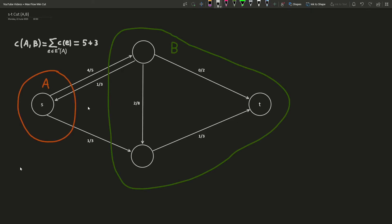The capacity of an ST cut is the sum of the capacities of all edges that stick out of A. We denote edges sticking out of A by writing E plus of A and edges sticking in by writing E minus. For the capacity of a cut, however, we ignore the edges that stick into A, so in this case it would just be 5 plus 3.